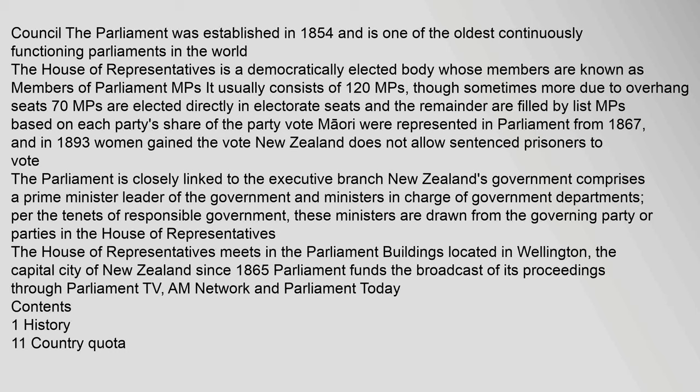In 1893 women gained the vote. New Zealand does not allow sentenced prisoners to vote. The parliament is closely linked to the executive branch. New Zealand's government comprises a prime minister, leader of the government, and ministers in charge of government departments. Per the tenets of responsible government, these ministers are drawn from the governing party or parties in the House of Representatives. The House of Representatives meets in the parliament buildings located in Wellington, the capital city of New Zealand.